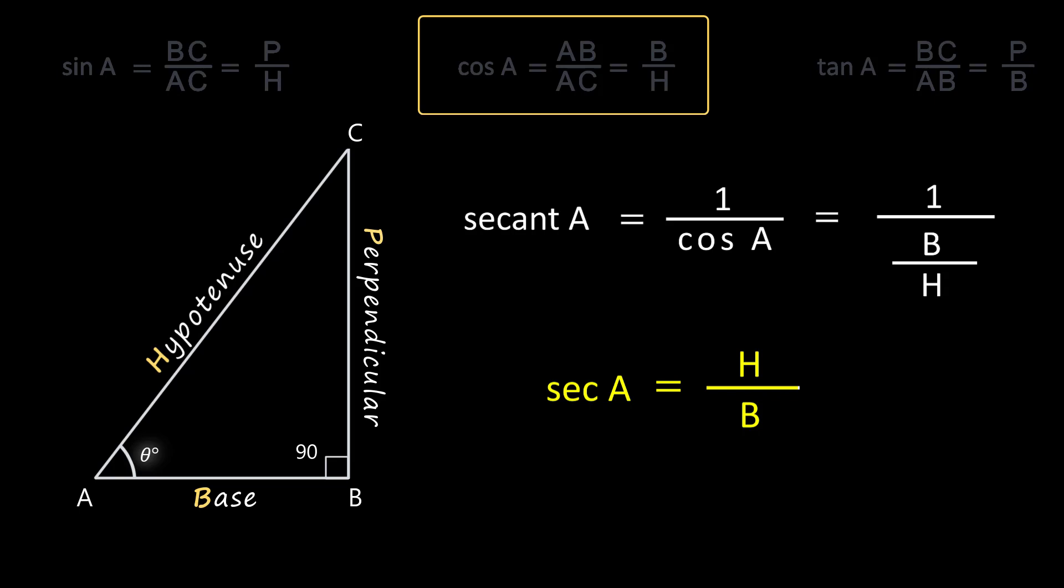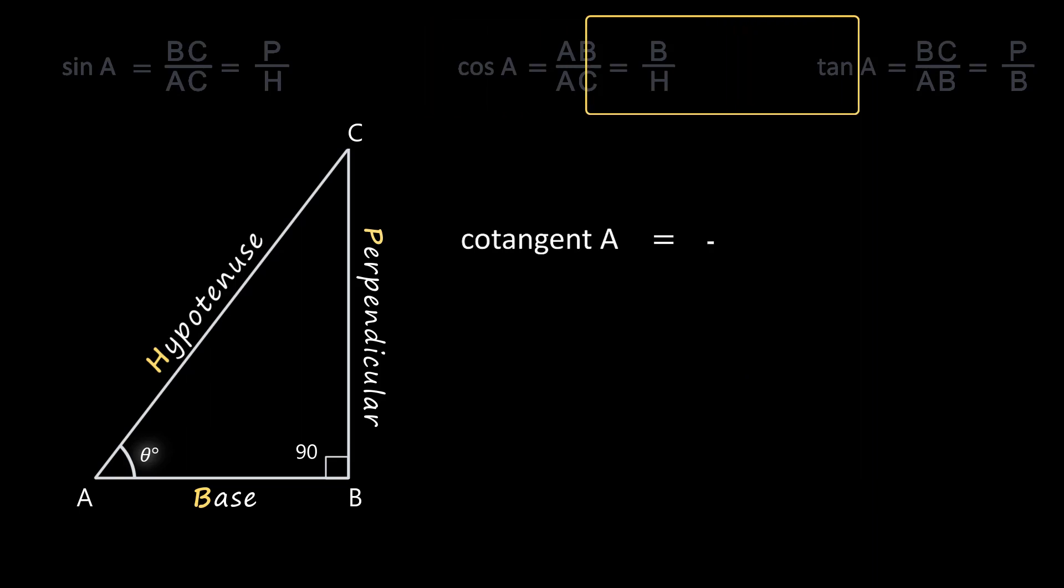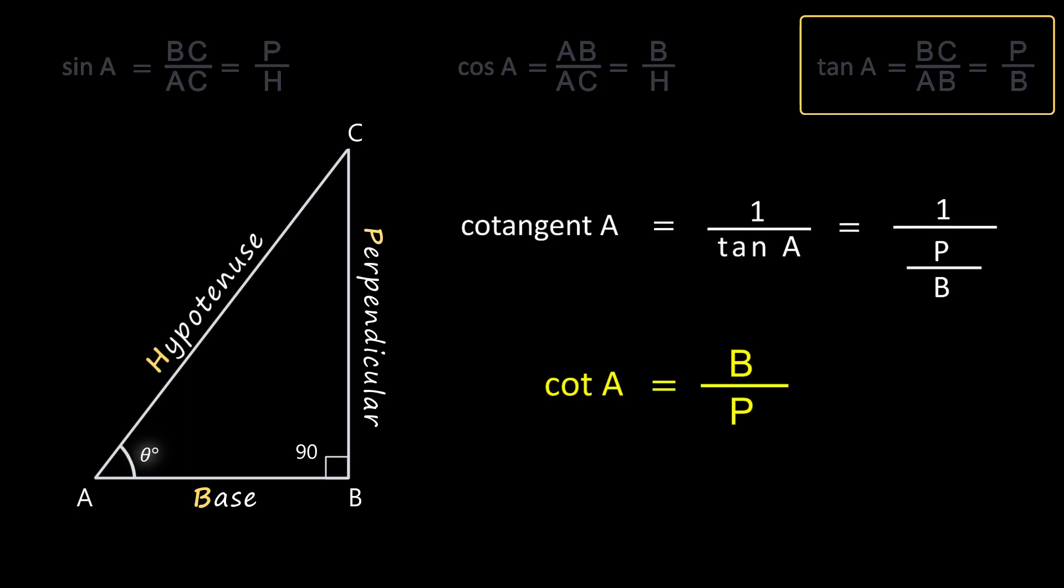So sec A is equal to AC by AB. Cotangent A or cot A is the reciprocal of tan A. We have derived the ratio of tan A to be equal to perpendicular by base. So cot A is equal to 1 by P by B. On reciprocating we get B by P where B is the base AB and P is the perpendicular BC. Therefore cot A is equal to AB by BC.